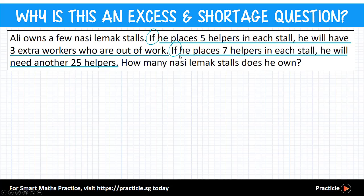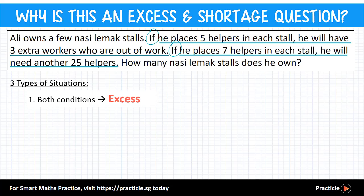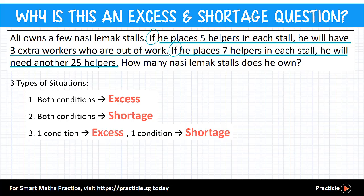For questions that deal with excess and shortage, they usually result in 3 types of situations. The first is when both conditions lead to having too much — an excess. The second is when both conditions lead to not having enough — a shortage. The third has a balance, where one condition leads to an excess and the other to a shortage. In this question, the first case gives Ali 3 extra workers (excess), and the second case means he needs more helpers (shortage). So this is situation 3.